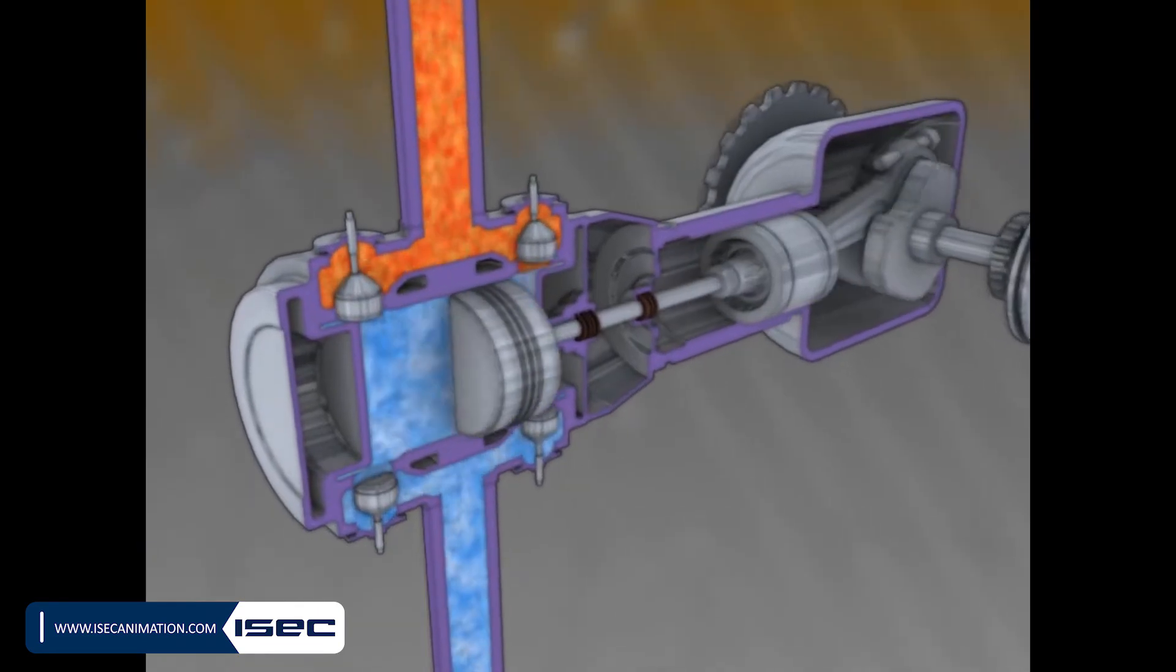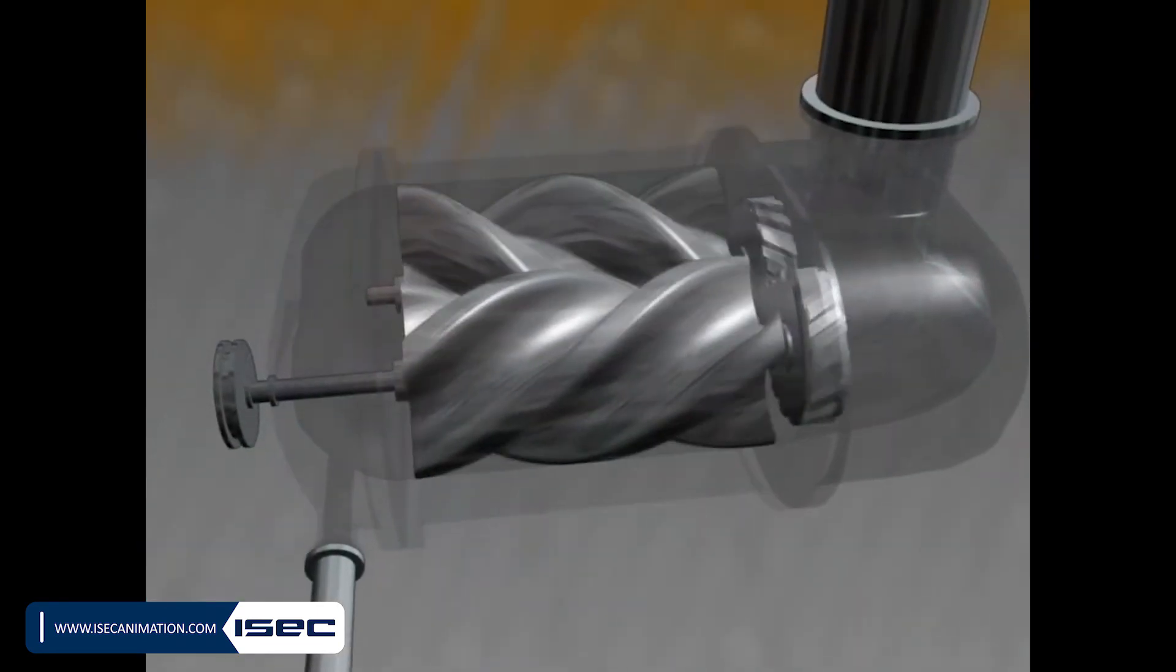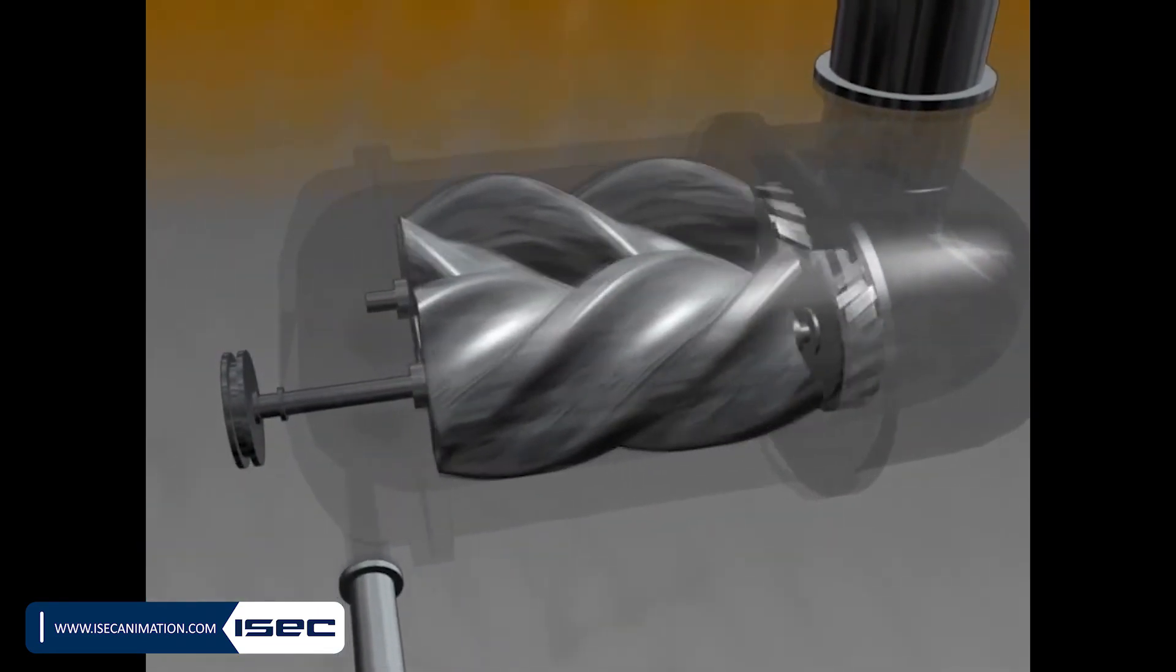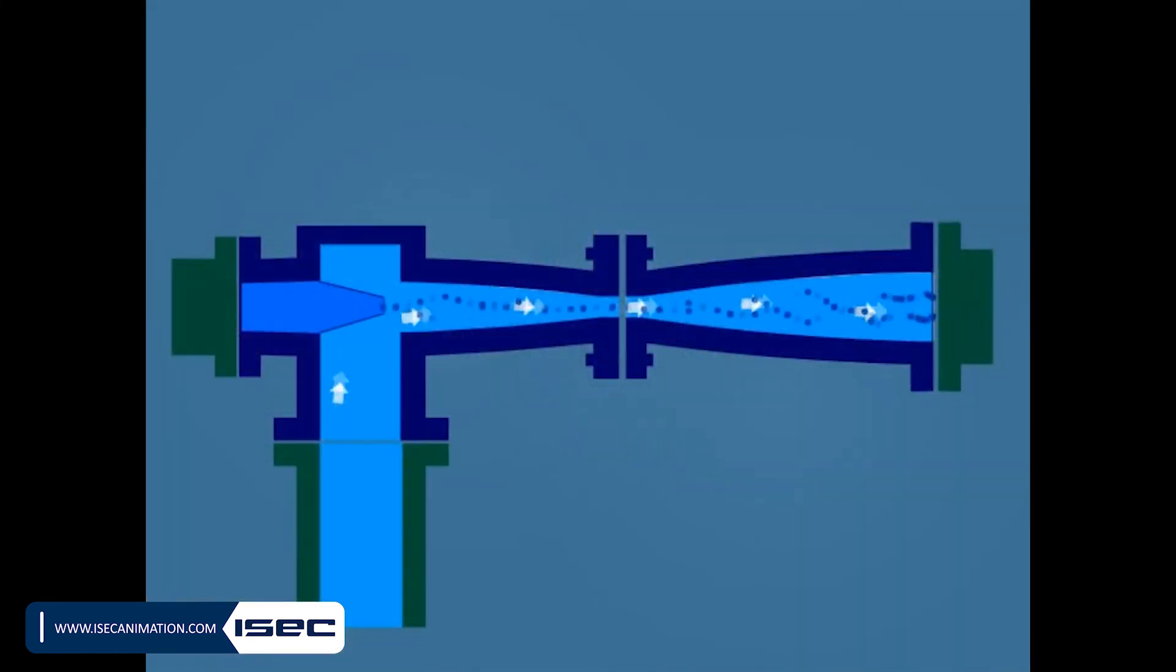Compressors using methods 1 and 2 are in the intermittent class and are known as positive displacement compressors. Those using method 3 are known as dynamic compressors.